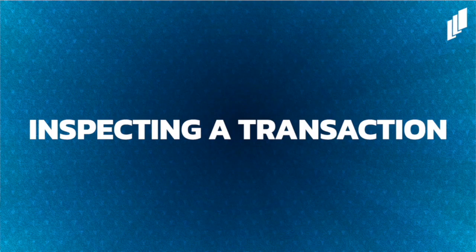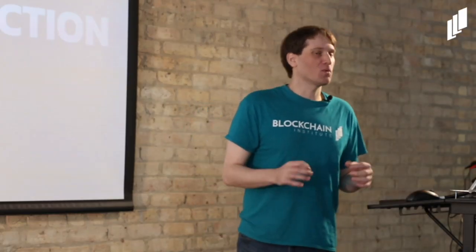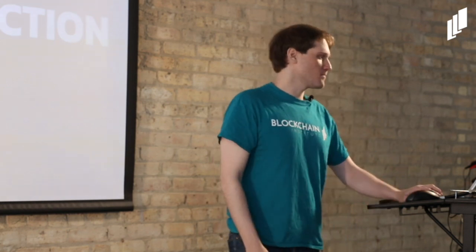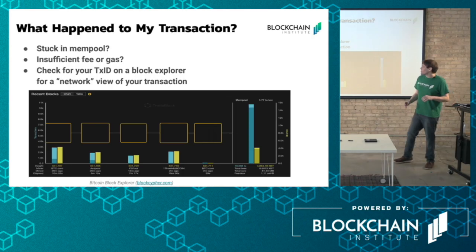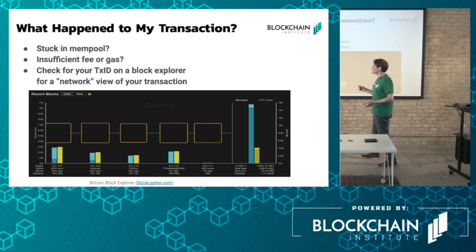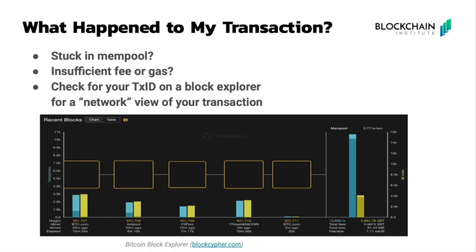We went over the mechanics of a cryptocurrency transaction, but what do we do when something goes wrong? What are some frequently encountered problems? Many problems with transactions have to do with the fee attached. Let's say you have a transaction out there, you're trying to send some money to a friend, and you put a really low fee onto the transaction.